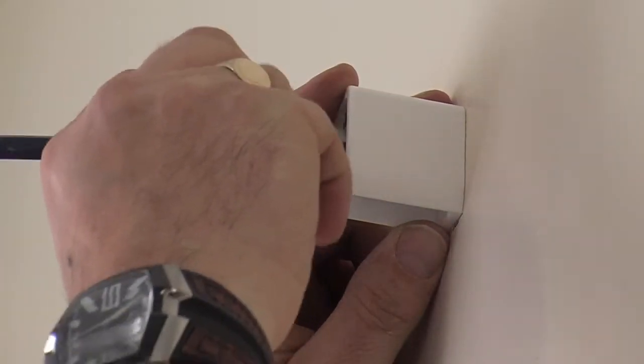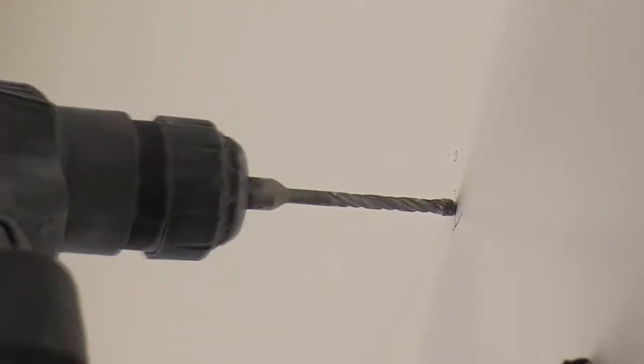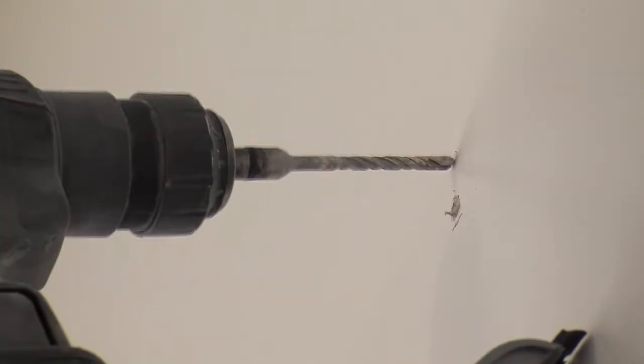The next stage is to mark out where the brackets go, and then of course drill the holes. Here we're using a 5.5mm drill bit, and it goes without saying, mind your fingers.